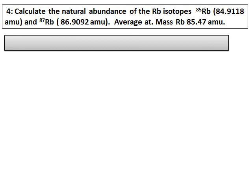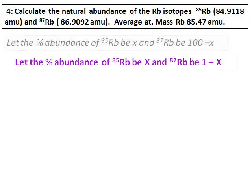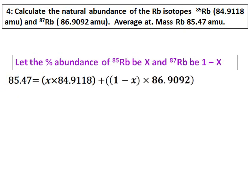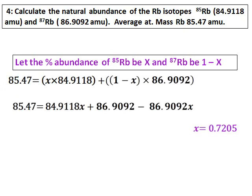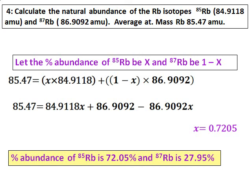This is the same rubidium question, but here is an alternative method. Instead of assuming rubidium-85 as x and rubidium-87 as (100 − x), assume rubidium-85 as x and rubidium-87 as (1 − x). Substitute all values and solve for x. You get x = 0.7205. Then multiply by 100 to get the percentage: rubidium-85 is 72.05%.